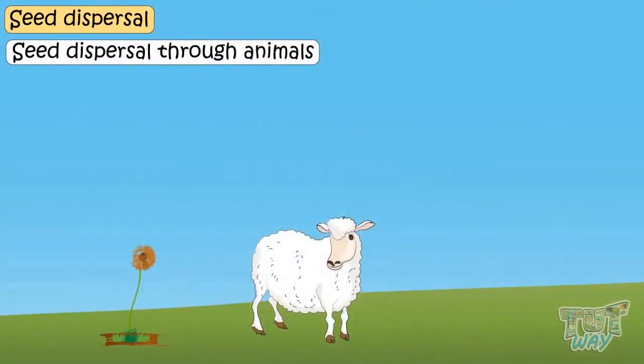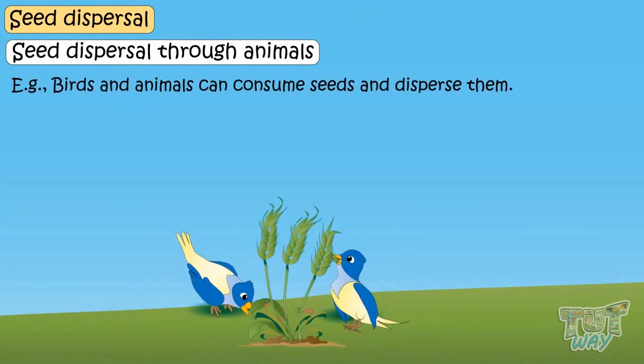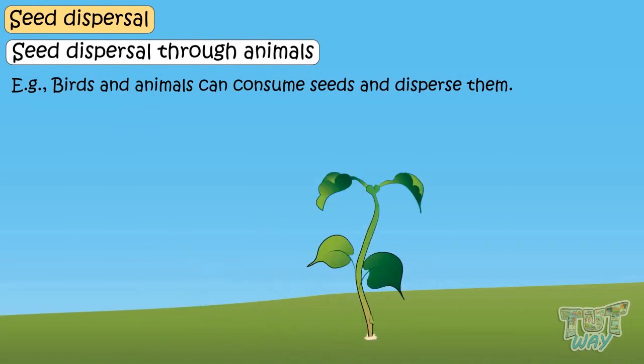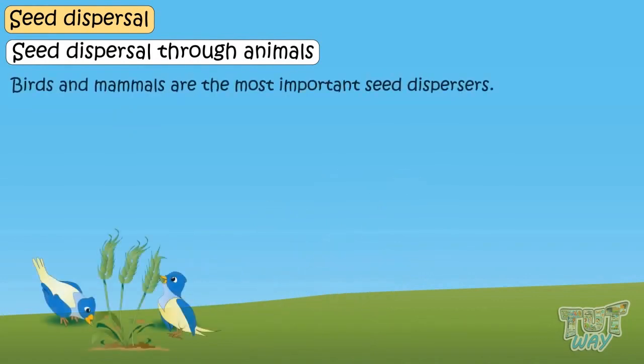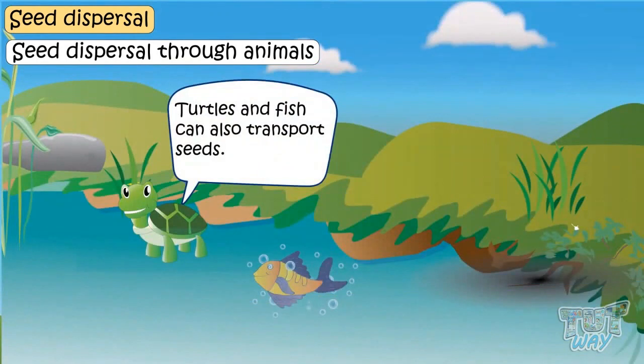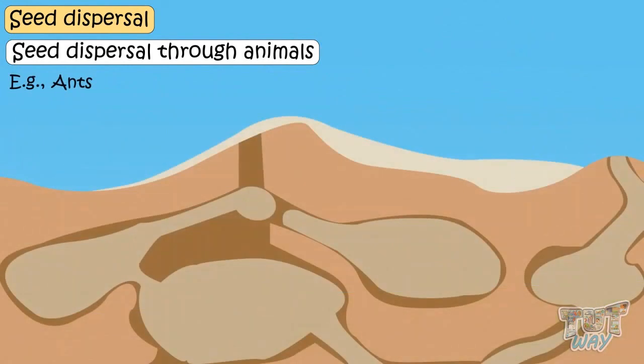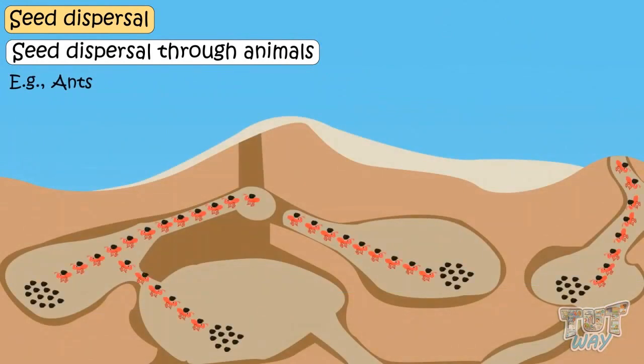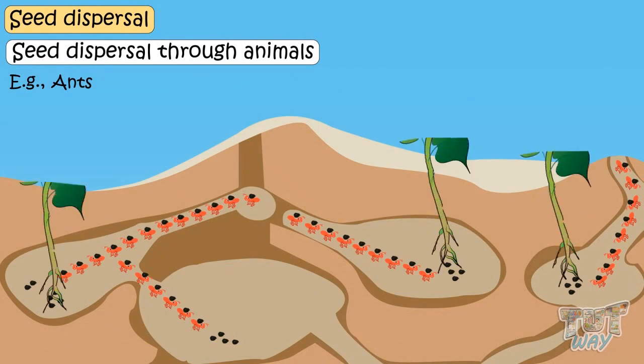Animals can disperse plant seeds in several ways. Seeds may get attached to animal fur. Birds and animals can consume seeds which are dispersed by means of waste removed from their body. Birds and mammals are the most important seed dispersers, but a wide variety of other animals, including turtles and fish, also can transport seeds. Ants carry seeds into their colonies and feed on some of them and leave some seeds in an underground chamber, and there they can germinate into new plants.